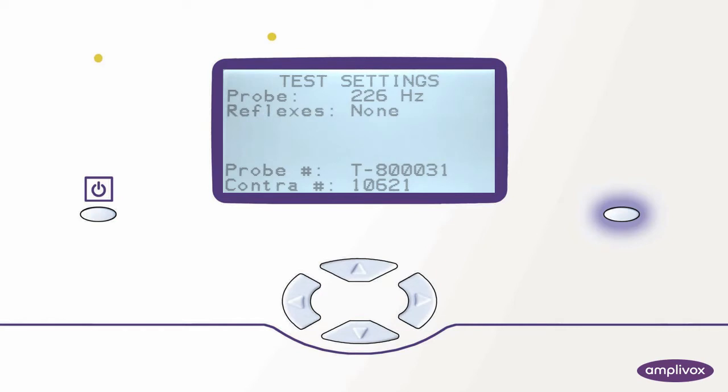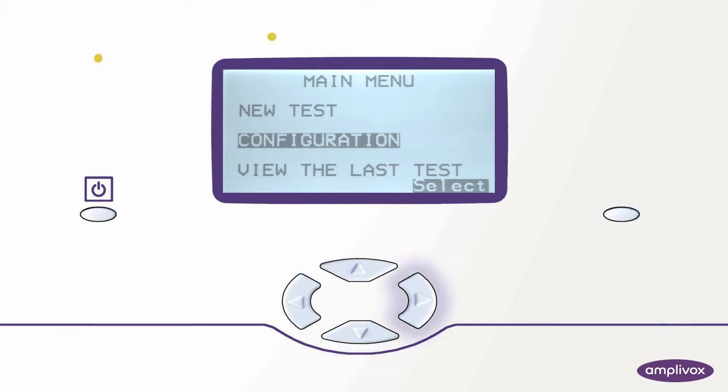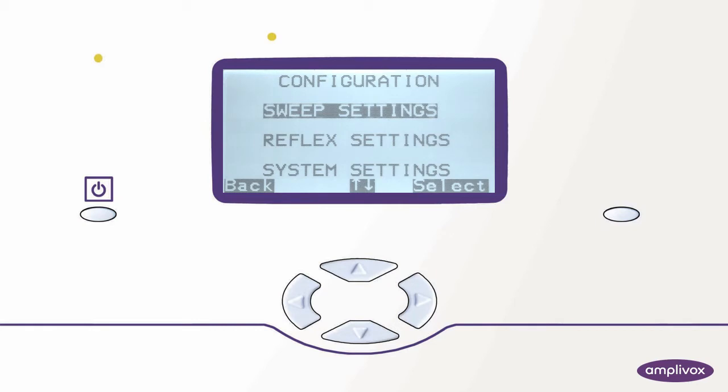So let's get started and activate our ipsilateral reflex test. From the main menu we press the down key once to move to configuration. In order to access the configurations we select the right key and we will be brought to all our instrument configurations.